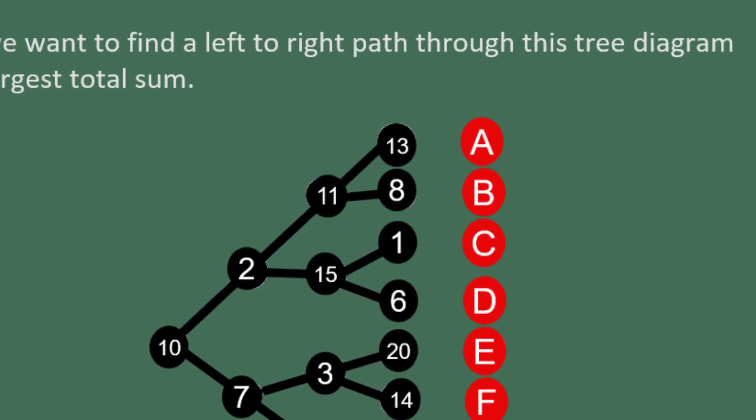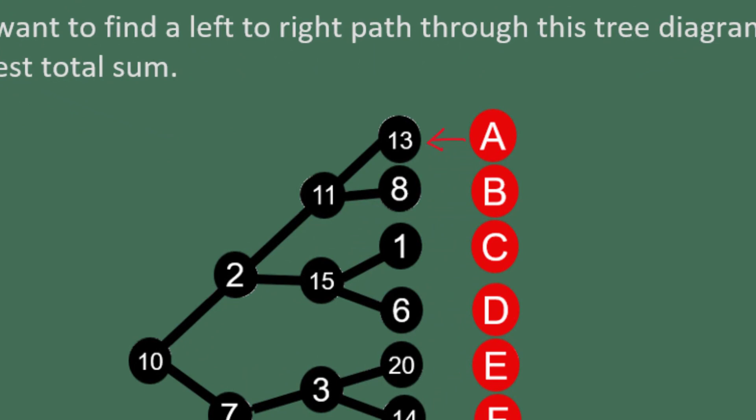For example, the first branch at the top is branch A. It includes 10, 2, 11, and 13. Oftentimes, it's easiest to identify a branch by working backwards through it.